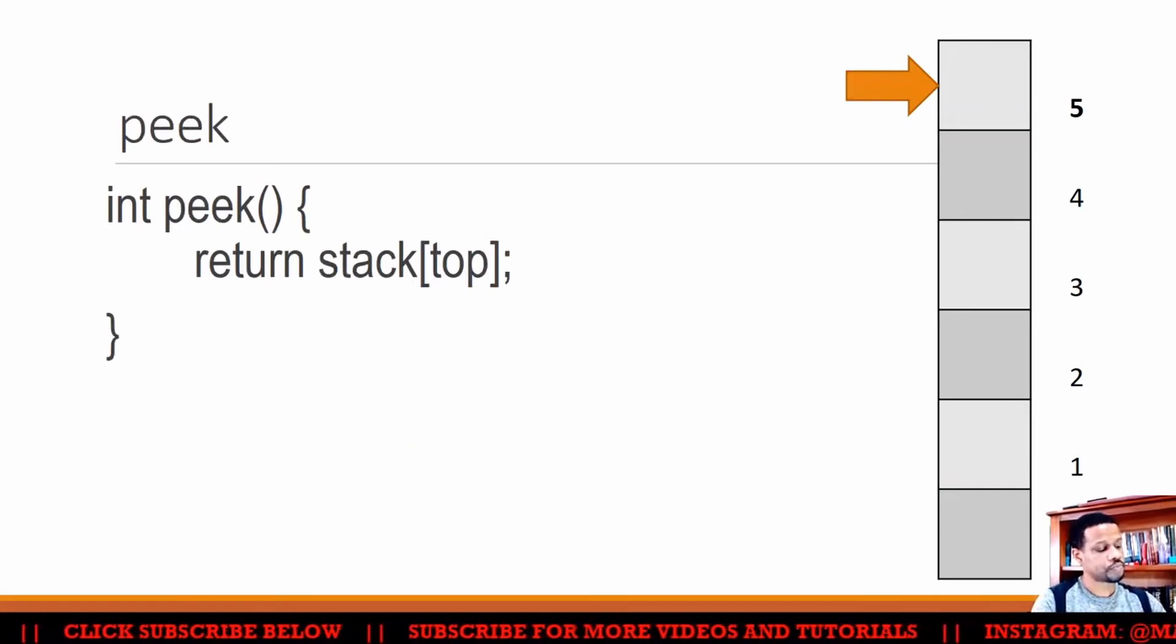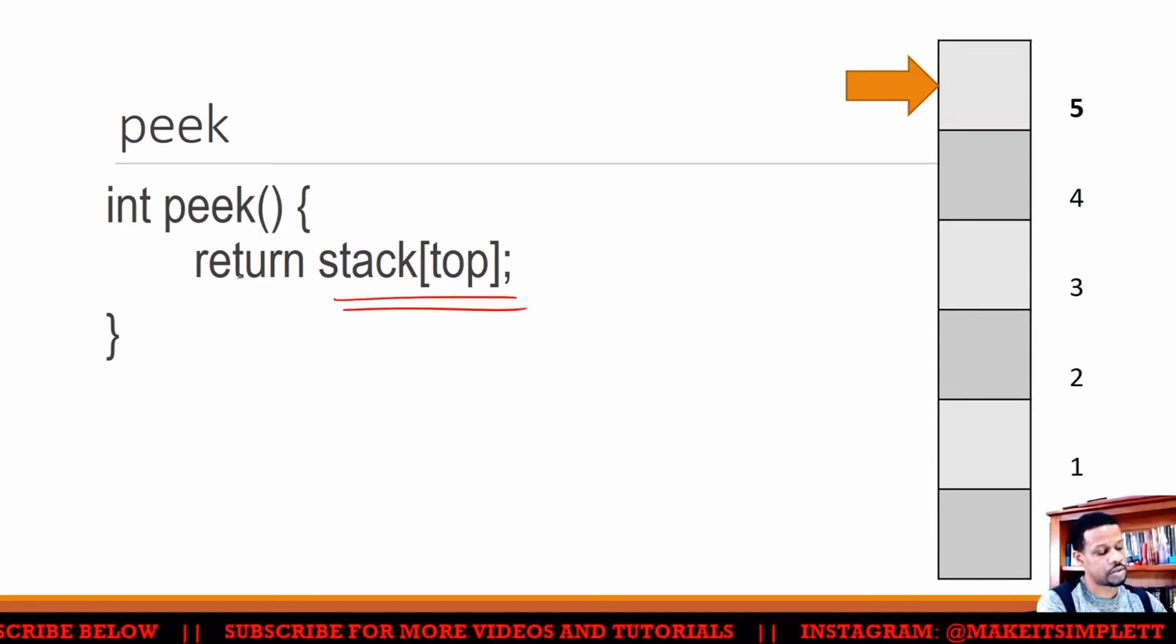So peek now would just be to peek at the top of the stack and return whatever top is at. So you can return it and you can see what number is inside there because top would be there.